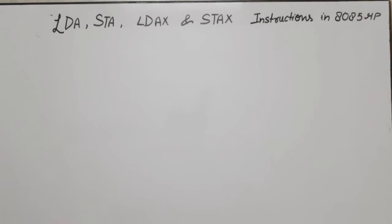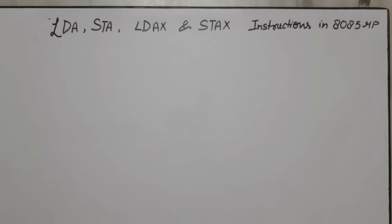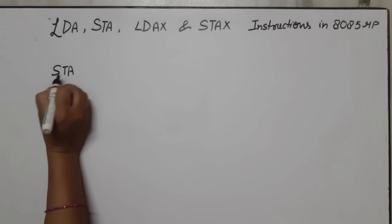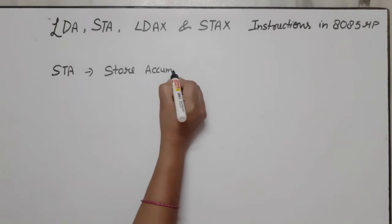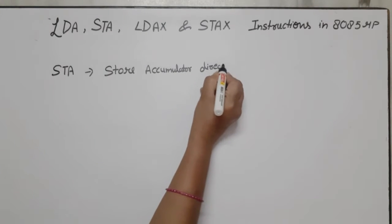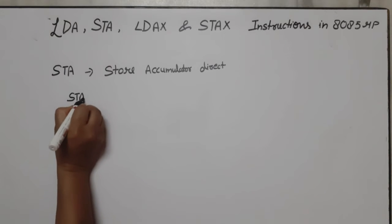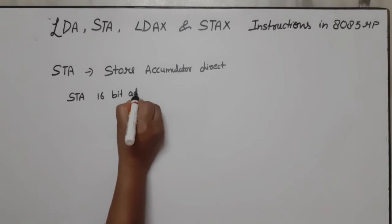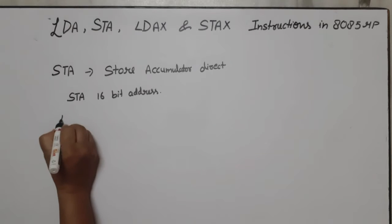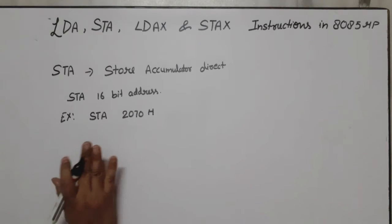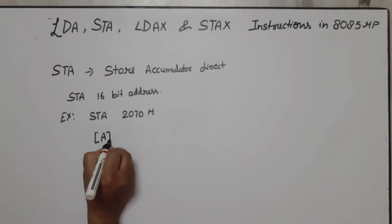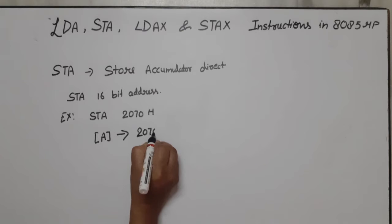In this video lecture on microprocessors, we will discuss some instructions of the 8085, like LDA, STA, LDX, and STX. We will discuss STA — Store Accumulator Direct — which means 'store accumulator.' The format is: STA followed by a 16-bit address. For example, STA 2070H means the content of the accumulator will be transferred to memory location 2070H.